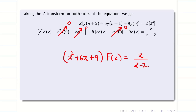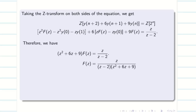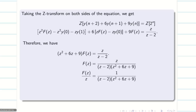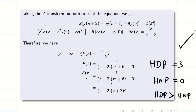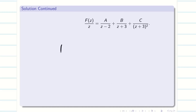Keep F(Z) on the left and push everything else to the right. For partial fractions, reserve Z in the denominator of F(Z)/Z: F(Z)/Z = 1/[(Z−2)(Z²+6Z+9)]. We know Z²+6Z+9 = (Z+3)², so F(Z)/Z = 1/[(Z−2)(Z+3)²]. The highest denominator power is 3 and numerator power is 0, so partial fractions apply: F(Z)/Z = A/(Z−2) + B/(Z+3) + C/(Z+3)².